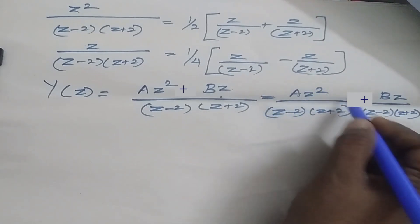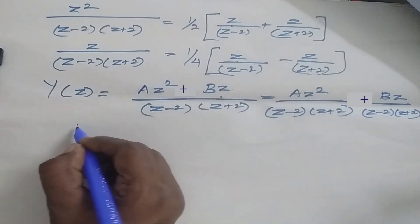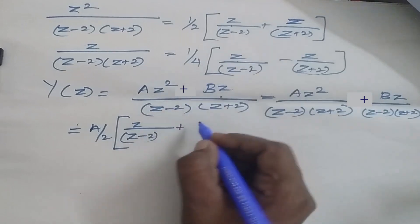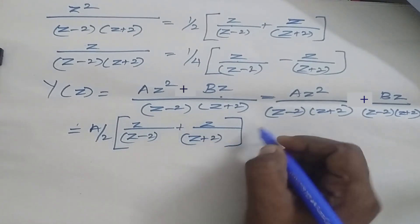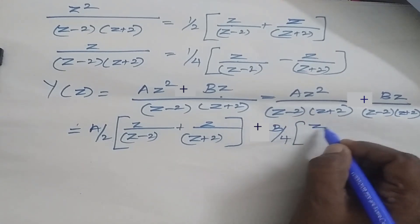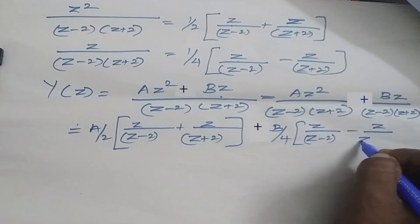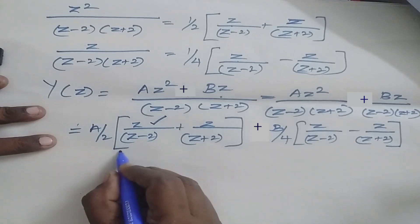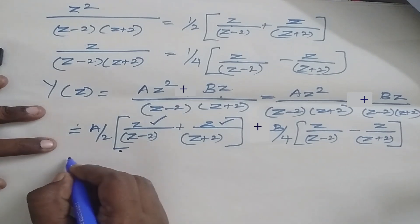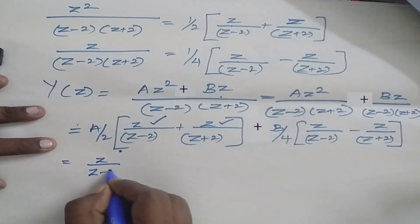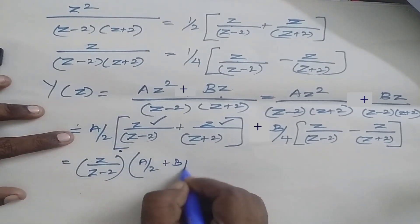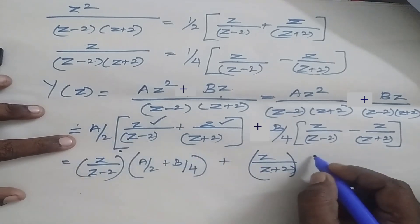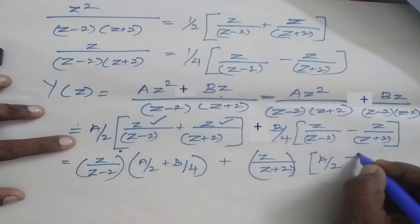For z²/(z² minus 4), I substitute the partial fraction result. For z/(z² minus 4), I substitute the other result. So Y(z) equals a/2 times [z/(z minus 2) plus z/(z plus 2)] plus b/4 times [z/(z minus 2) minus z/(z plus 2)]. Now combining z/(z minus 2) terms together and z/(z plus 2) terms together, I get z/(z minus 2) times (a/2 plus b/4), plus z/(z plus 2) times (a/2 minus b/4).